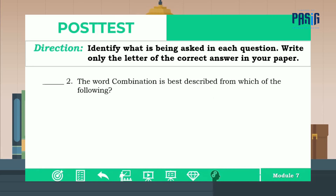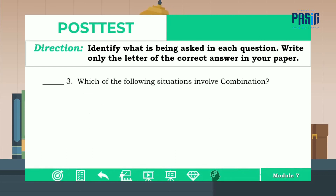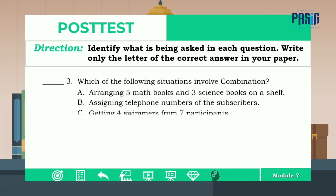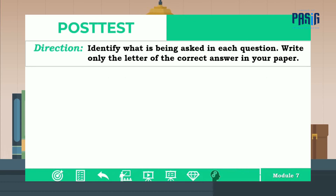Number two: the word combination is best described from which of the following? Is it A, B, C, or D? The correct answer is letter B. Number three: which of the following situations involves combination? Is it A, B, C, or D? The correct answer is letter C.